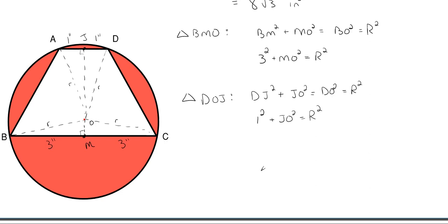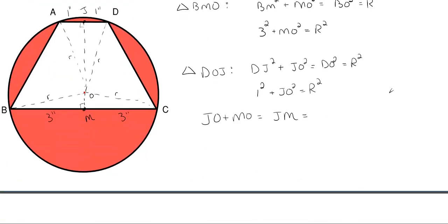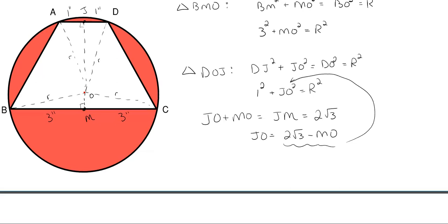Notice that JO plus MO equals JM, which is the height of the trapezoid. We already calculated that height to be 2√3 inches. So JO plus MO equals 2√3, which means JO equals 2√3 minus MO.